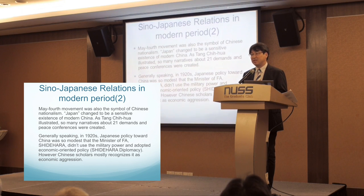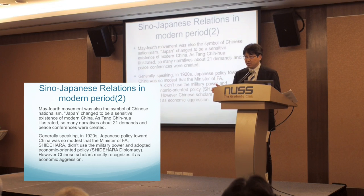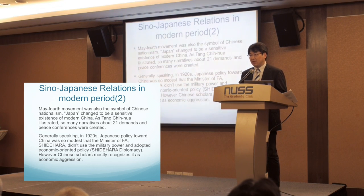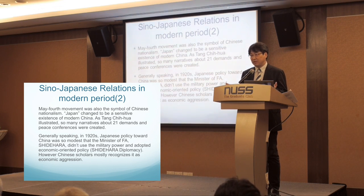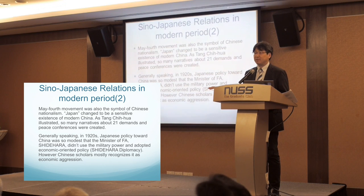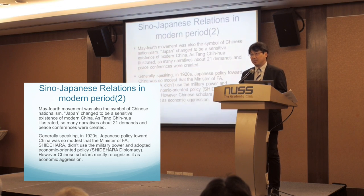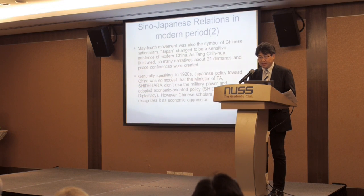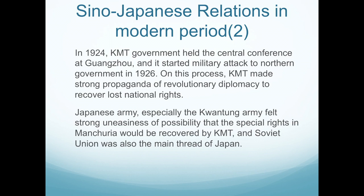Under the Washington System, as proposed by Professor Iriye Akira at Harvard University, from 1921 to 1931 Japan maintained peace with the USA and Britain in China and the Pacific. Japan kept a kind of balance policy with USA and Britain. However, Chinese scholars now do not accept this concept and recognize Shidehara diplomacy as economic aggression. This difference of historical interpretation between Japan and China is very interesting.